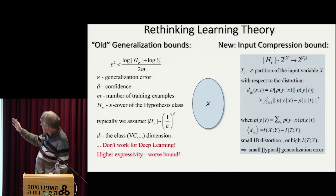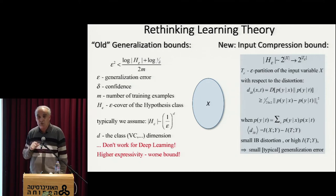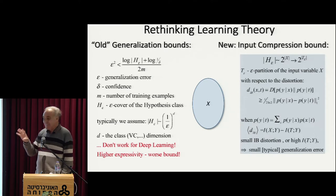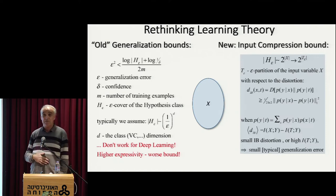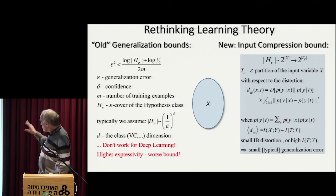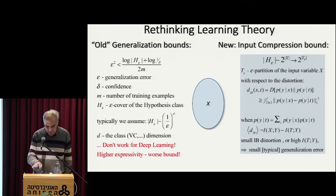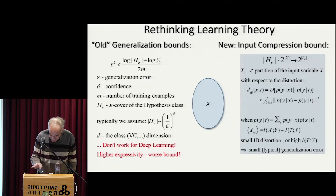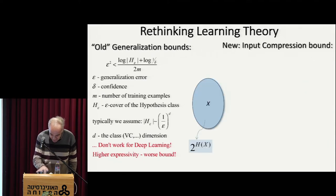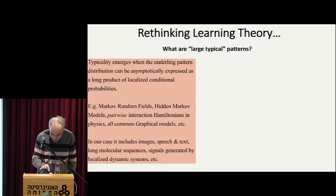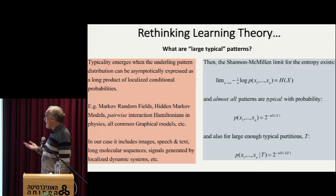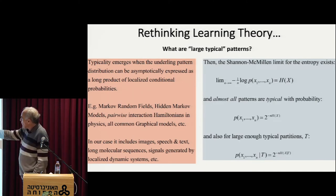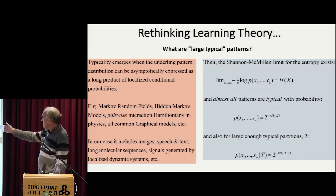But if I somehow manage to cover my input by cells which are going to be eventually more and more homogeneous with respect to the label, then I move from the number of labels that I need — from two to the X — to two to the cardinality of the cover. And there are all sorts of tricks how I can do this. I'm going to assume typical patterns. In information theory, typical patterns are things where the one-over-n log of the probability of many, many samples converges in the large limit to a number which we usually call the entropy, or the source entropy.